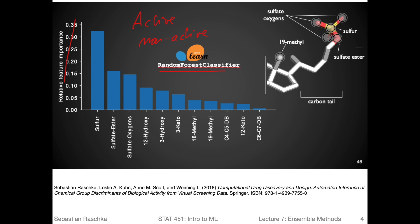We'll talk more about how feature importance works later when we discuss random forests in this lecture. The key takeaway here is that sulfur atoms are most important for making predictions about active and non-active molecules — along with sulfur esters, sulfur oxygens, and so forth. These polar atoms at the tail of a molecule are the most important for deciding whether the molecule is active. Random forests not only give you good predictions but also allow you to deduce feature importance.